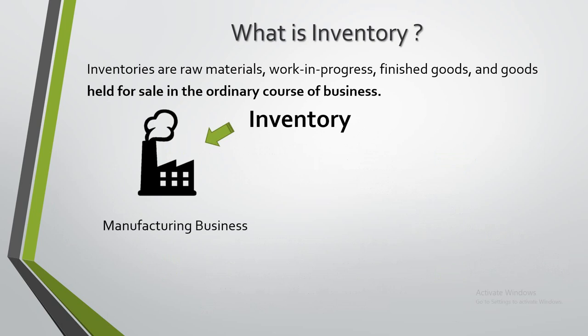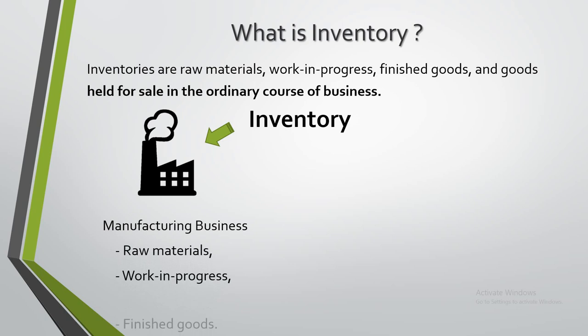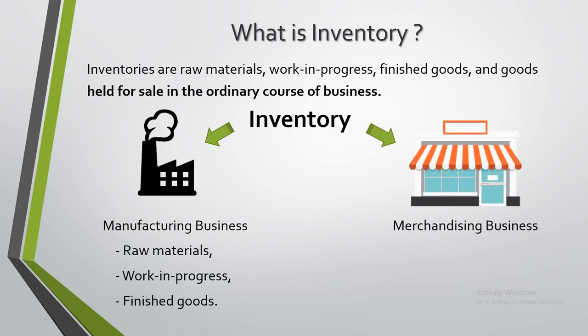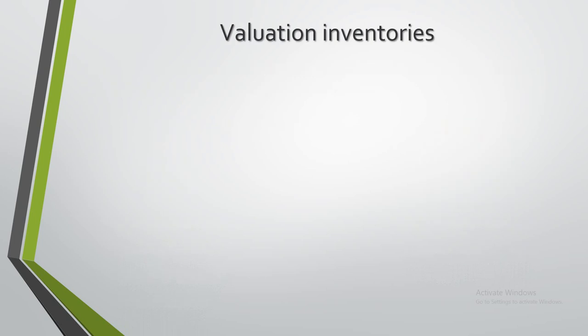There are two types of inventory. The first type is for manufacturing businesses, covering raw materials, work in progress, and finished goods. The second type is for trading businesses, which includes goods held for sale.